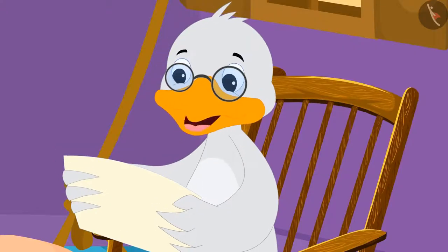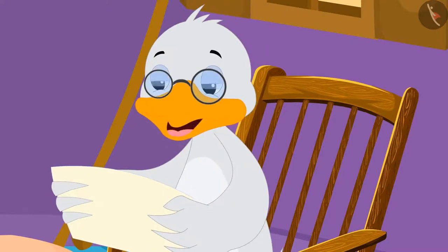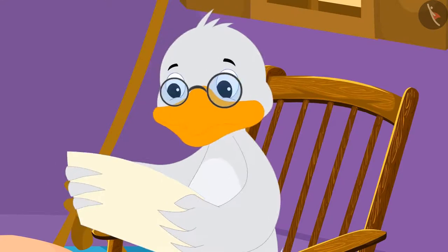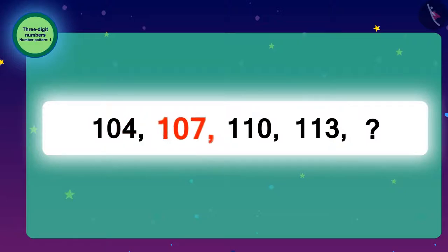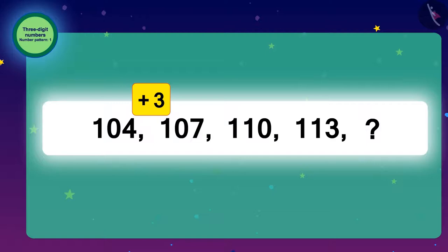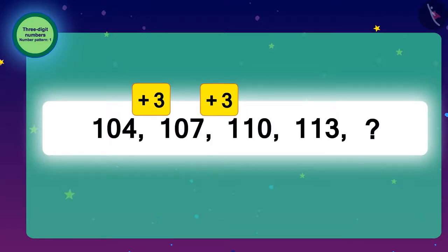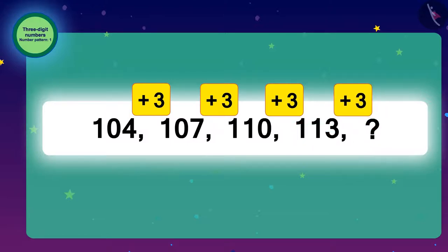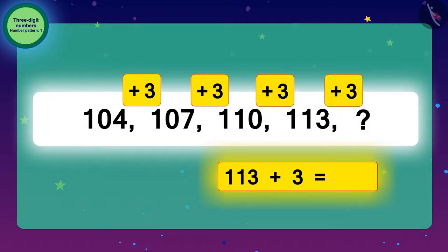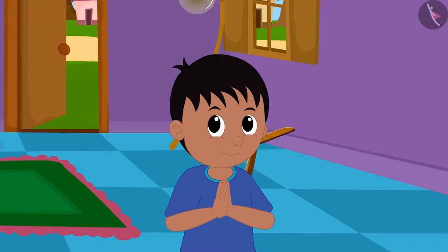Look at the sequence of numbers. Can you identify the sequence and tell the next number? To get from 104 to 107, we add 3. To get from 107 to 110, we add 3 again. Similarly, we add 3 to 113, so the next number would be 116.